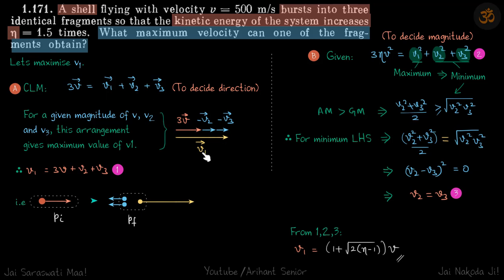So vectorially I can write this equation as v1 vector equals 3v vector minus v2 vector minus v3 vector. And for v1 to be maximum for these three given magnitudes, they need to be collinear vectors. And because they are now collinear, we can remove the vector signs and simply write v1 equals 3v plus v2 plus v3, where these represent just the magnitudes.